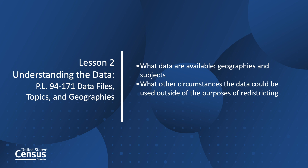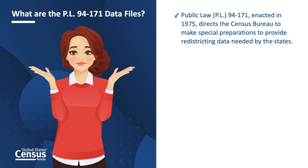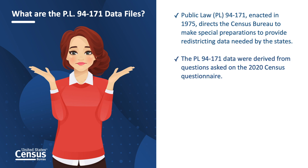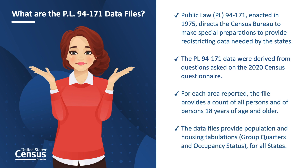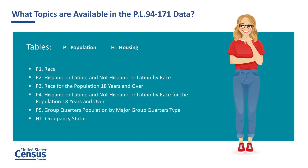You will also learn what other circumstances the data could possibly be used for outside of the purposes of redistricting. Public Law 94-171 directs the Census Bureau to provide states the opportunity to identify small geographic areas for which specific data tabulations are needed and deliver high-quality tabulations for those geographic areas to the states in a timely manner for the purpose of legislative redistricting. The data in the 2020 Census PL 94-171 Redistricting Data Files are derived from response data collected from the 2020 Census. This decennial, the Census Bureau added data for the group quarters population by major group quarters type. Let's take a look at the PL 94-171 Redistricting Data File topics you can access.